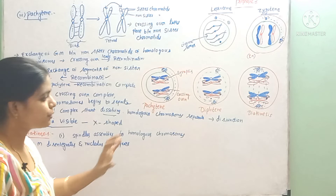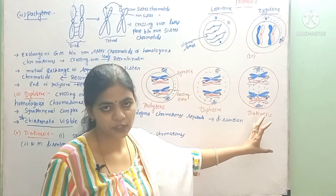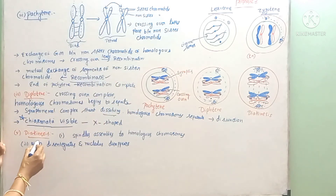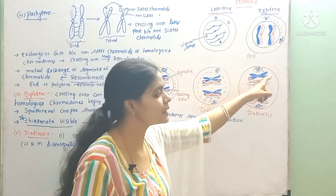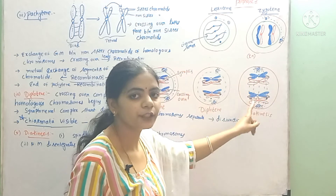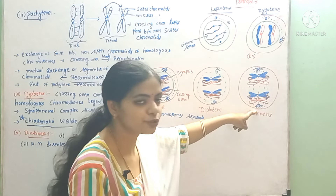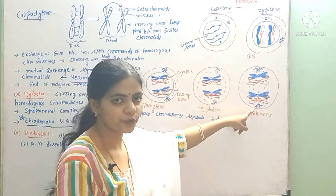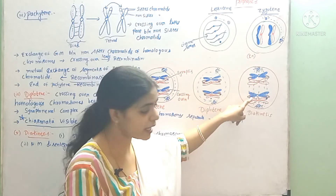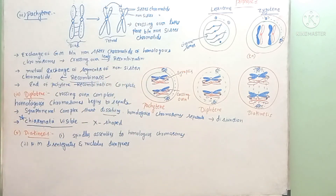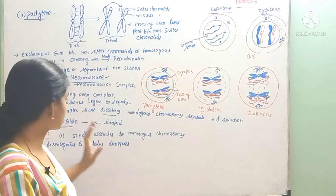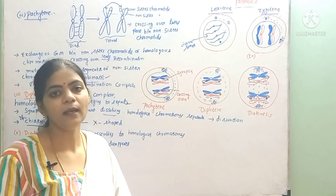Next the cell enters diakinesis, the last stage of Prophase 1 and a transition to Metaphase 1. Here, complete disintegration of the nuclear membrane and nucleolus occurs. The centrioles move to the opposite ends, and aster formation takes place. From the aster, spindle fibers are generated, which attach to the homologous chromosomes to separate them. With this, Prophase 1 is completed.